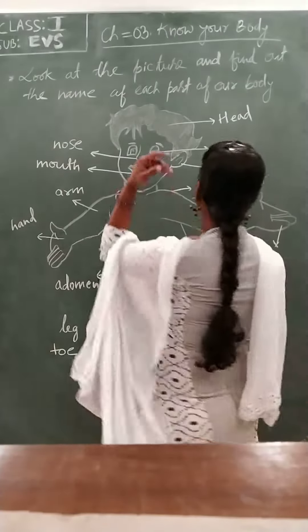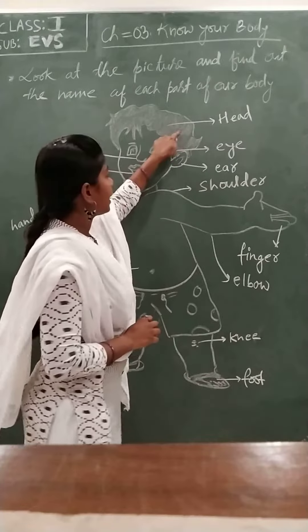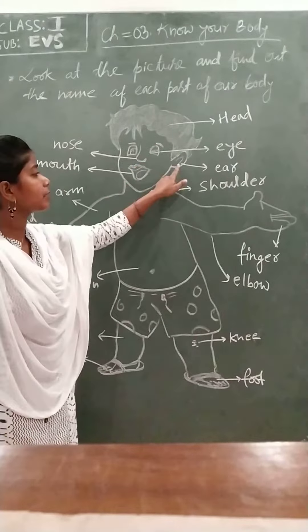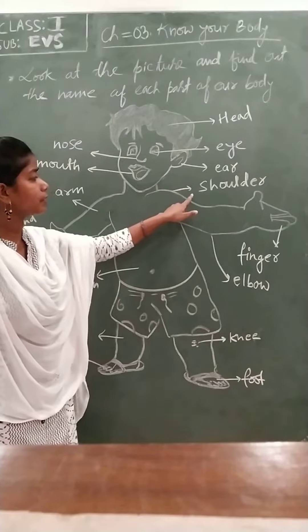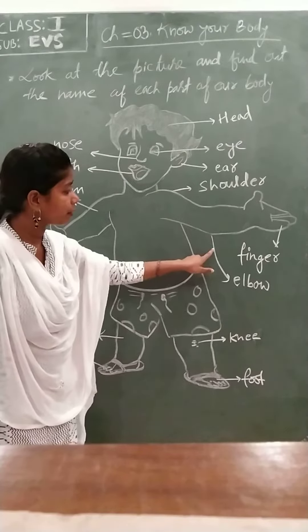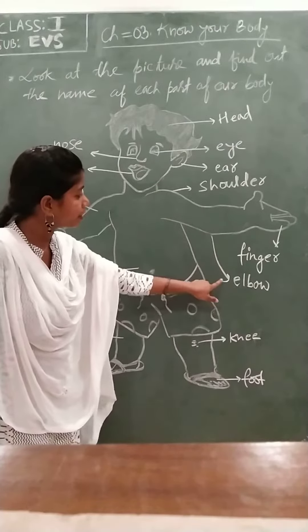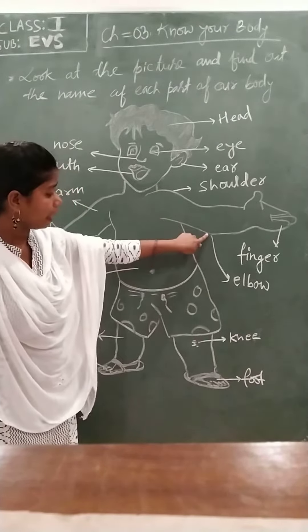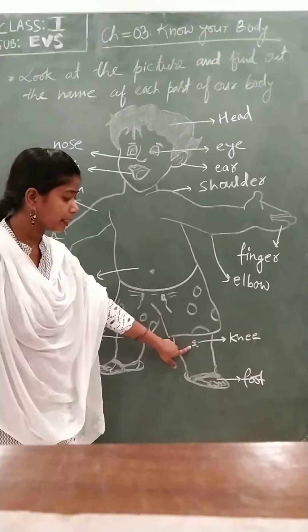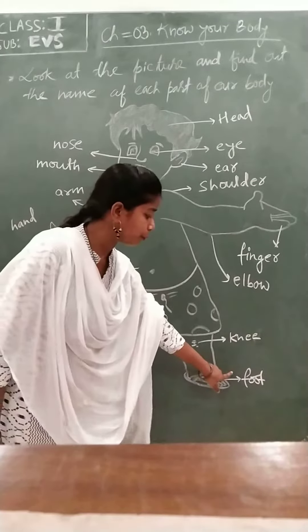This is head, this is eye, this is ear, this is shoulder, this is finger, and here this is elbow. Now this is knee and foot.